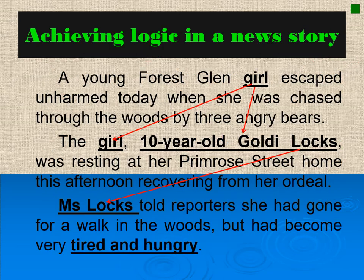In my previous video, I talked about how to teach news writing using children's stories, and let me go back to that story to illustrate logic in news writing. The story goes this way: A young Forest Glen girl escaped unharmed today when she was chased through the woods by three angry bears. The main element in the first paragraph or the lead is 'the girl.' The second paragraph expounds that element: 10-year-old Goldilocks was resting at her Primrose Street home this afternoon, recovering from the ordeal.